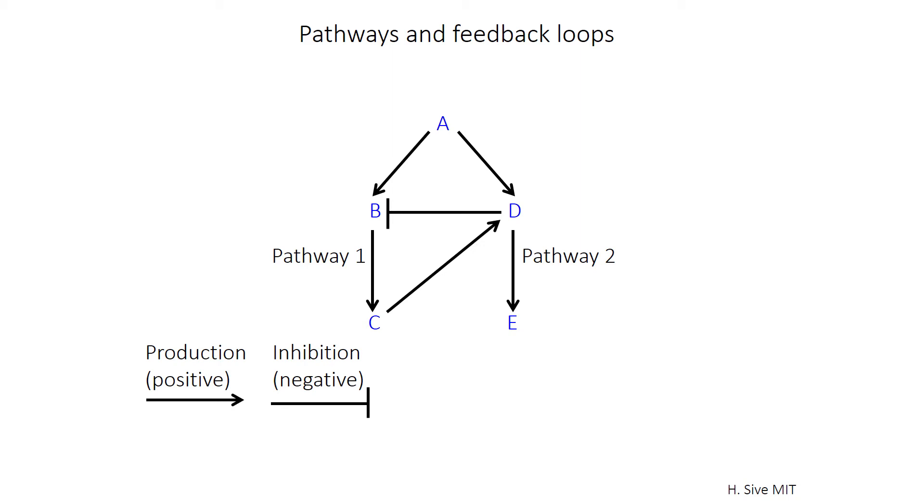You can also have a negative feedback, where once you've got lots of D, you might want to turn off the other pathway. And so D might inhibit production of B and C with this feedback inhibition, this negative feedback.